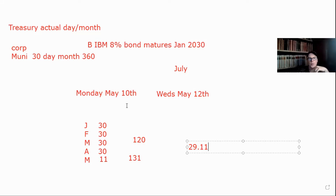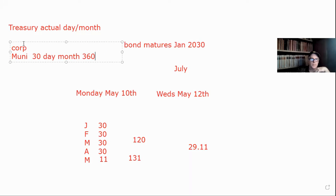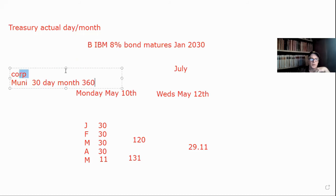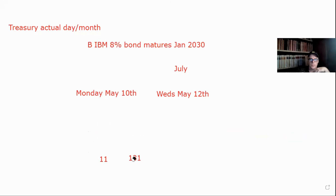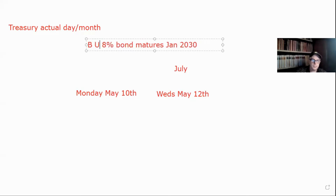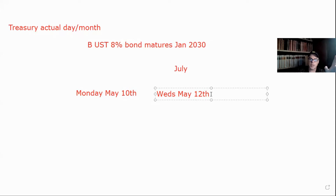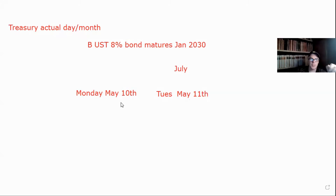So let's do another one. We'll erase a couple of things. We're done with the corporate. Now I change this to a T-bond — UST, 8% bond, matures January 2030. Same maturity, but what happens with settlement? Remember, Treasuries settle T plus one. So this is going to settle on Tuesday, May 11th. Remember, you count the day before settlement. So we're doing 10 days in May because we're counting to the 10th. We're going to put 10 days here.